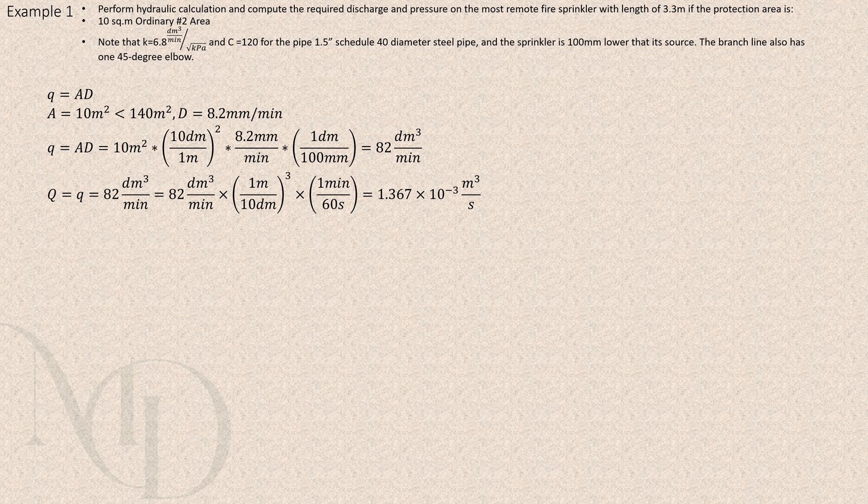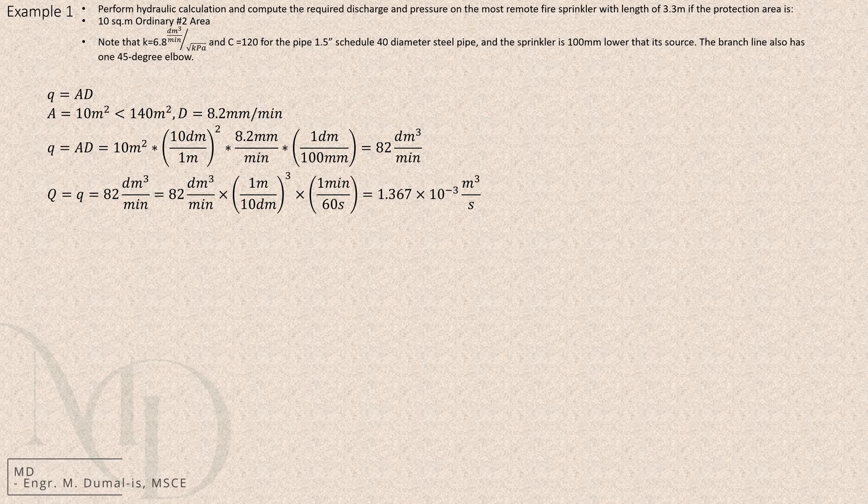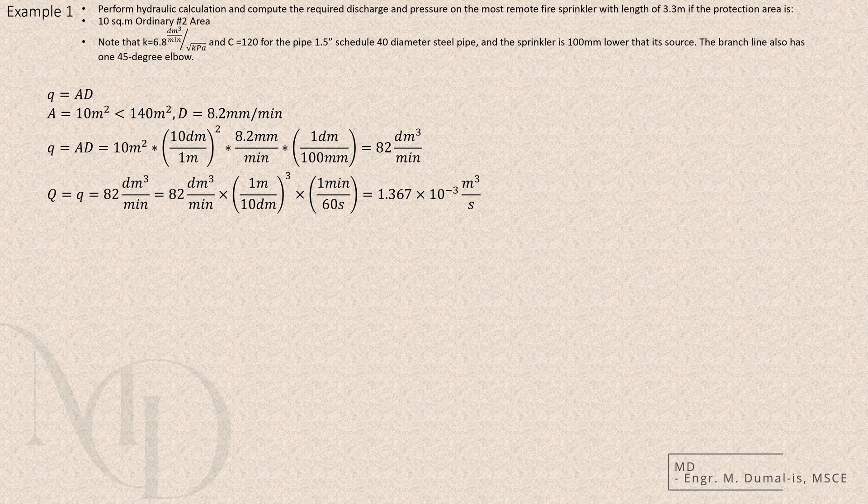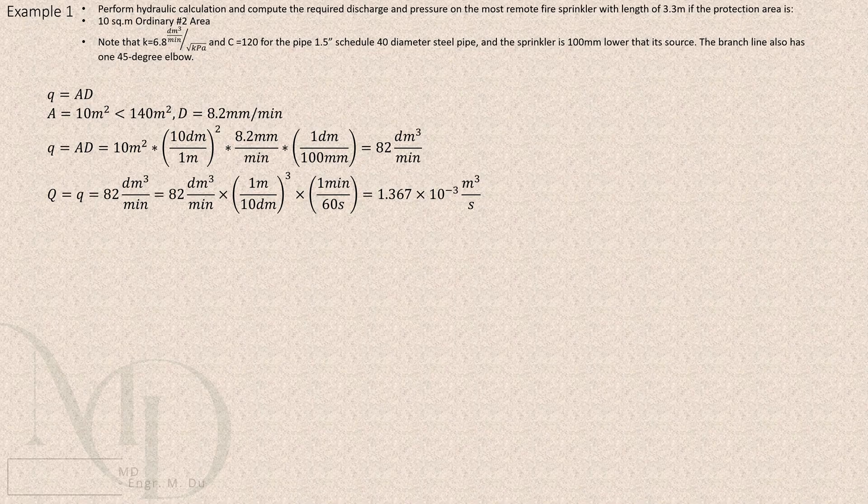With those values, we can now compute for the discharge of the sprinkler. Before calculating, we first convert the area into square decimeters and the density into decimeters per minute. This gives us an output in cubic decimeters per minute, which is preferred since one cubic decimeter is equal to one liter. If you wish, this discharge value may also be converted into cubic meters per second for reference.